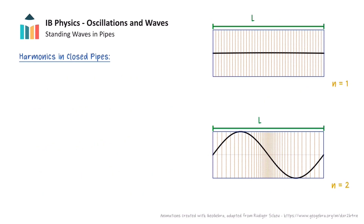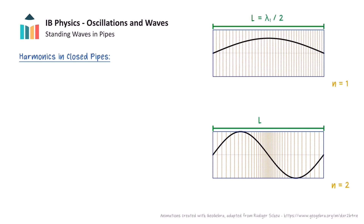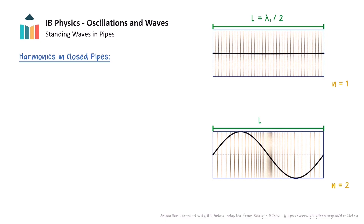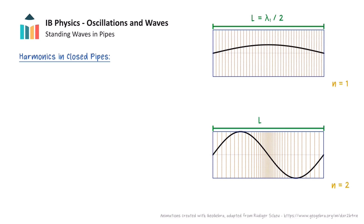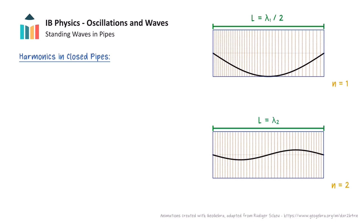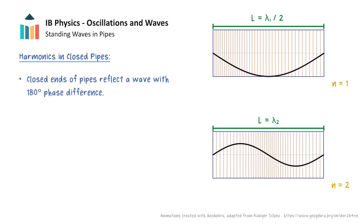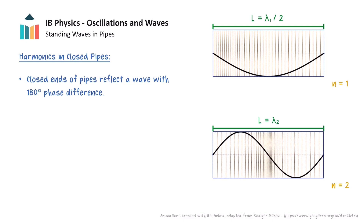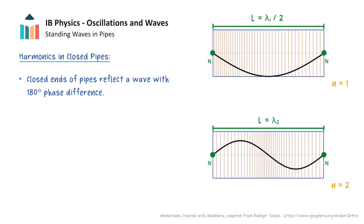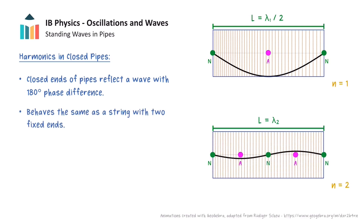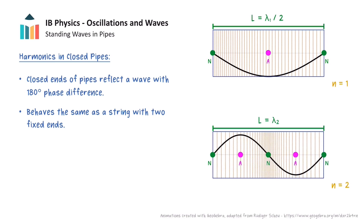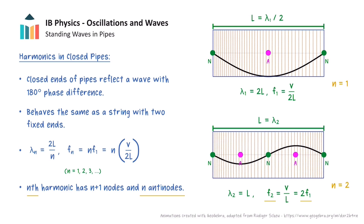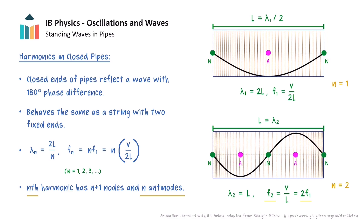We will now briefly look at a pipe that is closed at both ends. When reflection takes place at a closed end of a pipe, the air particles next to the closed end are unable to be displaced, so they are effectively fixed in place, analogous to the fixed end of a vibrating string. This results in a reflected wave with a 180 degrees phase difference to the incident wave. This means that standing waves formed in this pipe will have a node at each of the closed ends, and they will behave the same as standing waves on a string with two fixed ends. Hence the harmonics in a closed pipe of length l satisfy the following properties, where the nth harmonic has n plus 1 nodes and n antinodes.